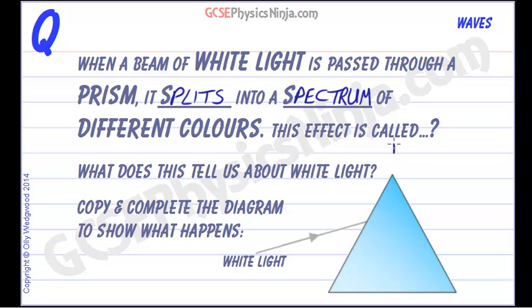This effect is called dispersion and it tells us some information about the nature of white light. It actually tells us that white light is a mixture of all of the colours of the spectrum.